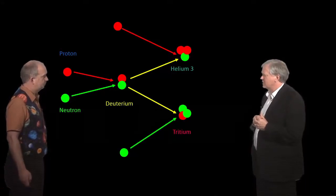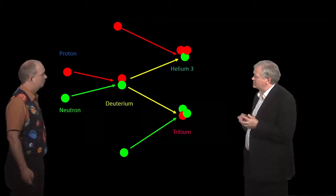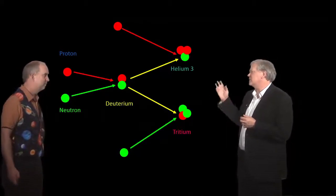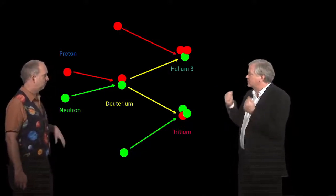Yeah, deuterium, it turns out, is heavy hydrogen, as it's sometimes referred to in movies. But it is the least stable form, well, it's, I won't say the least stable form of hydrogen, but it's not very stable. It's very easy to convert into something else.